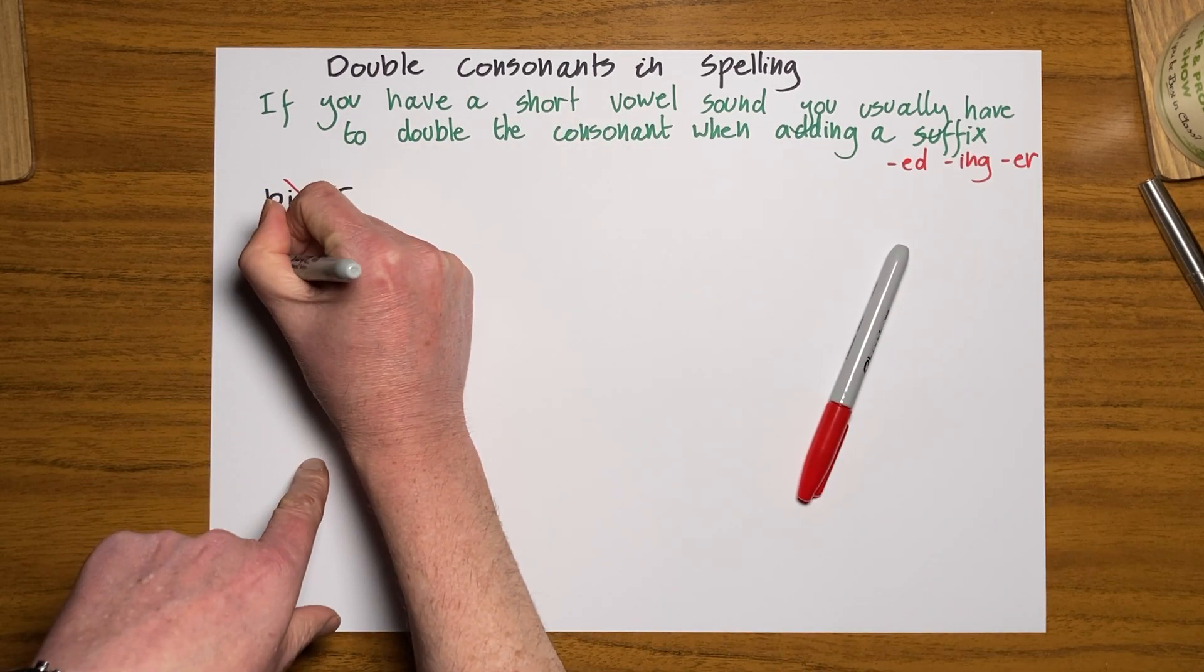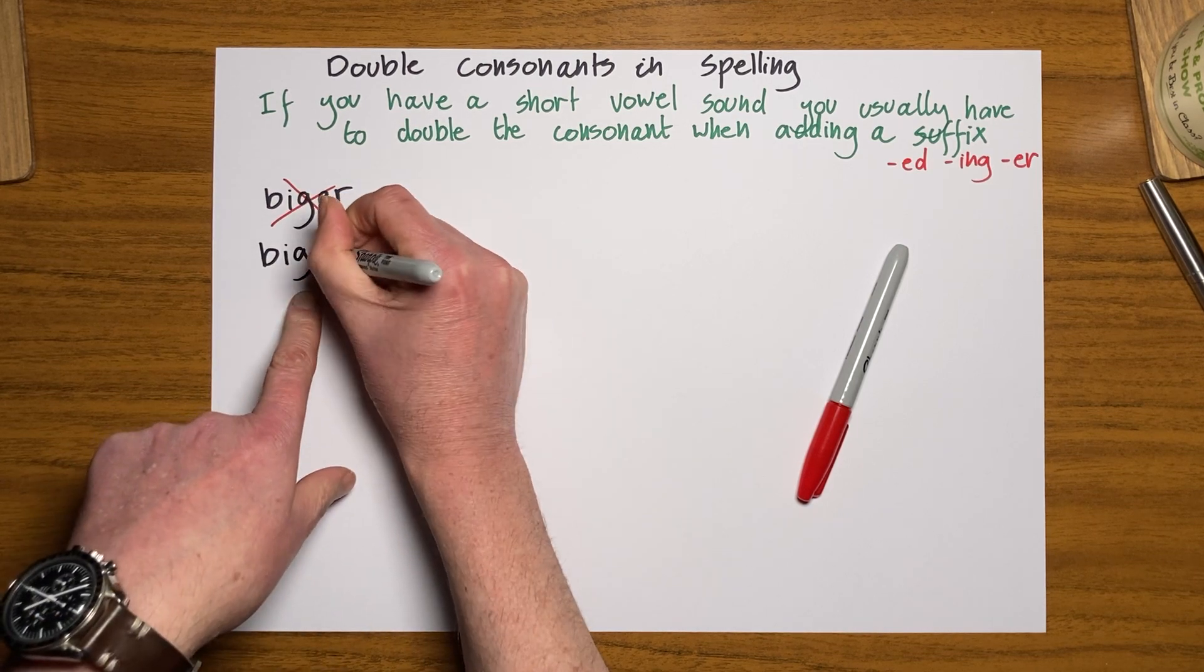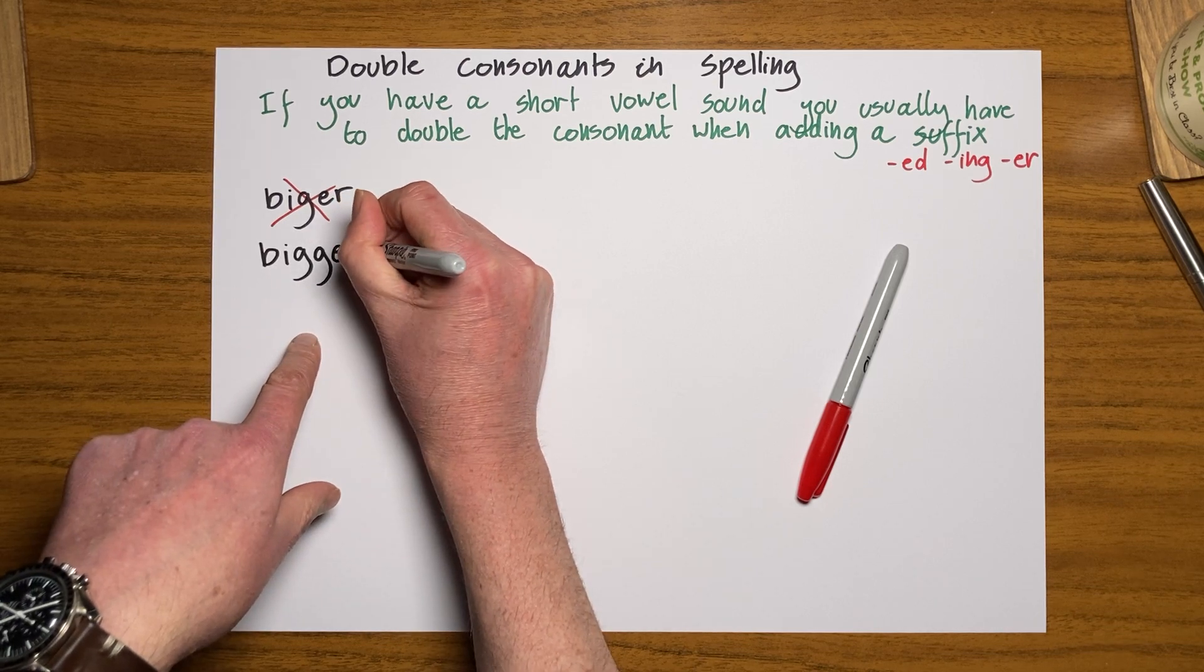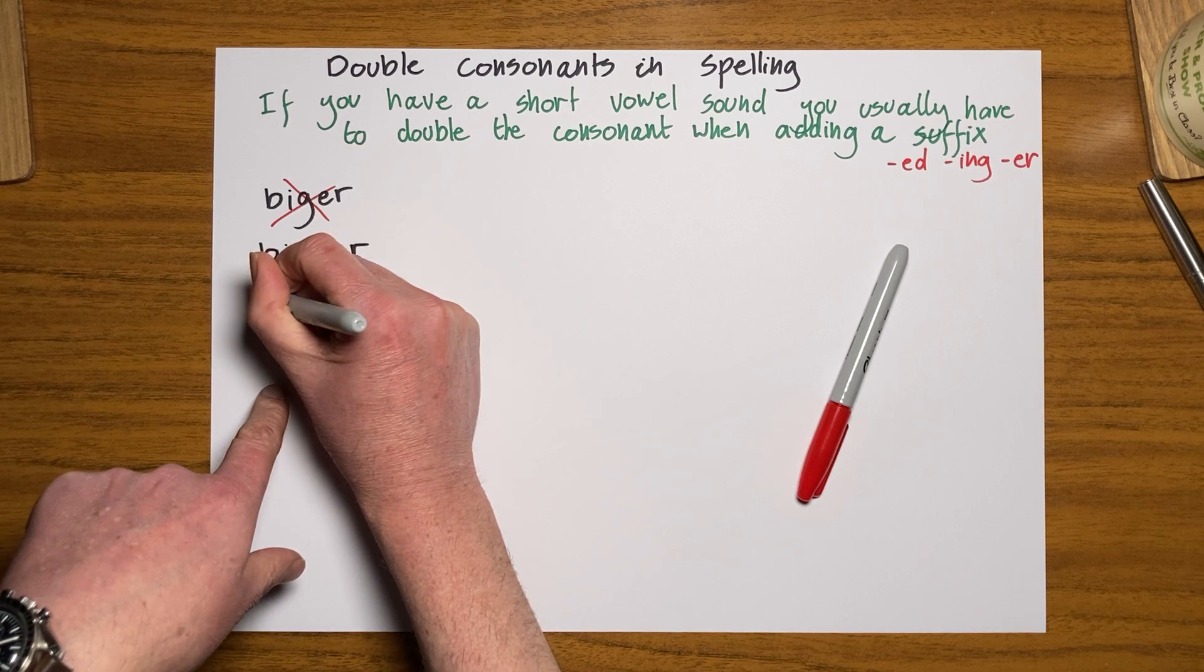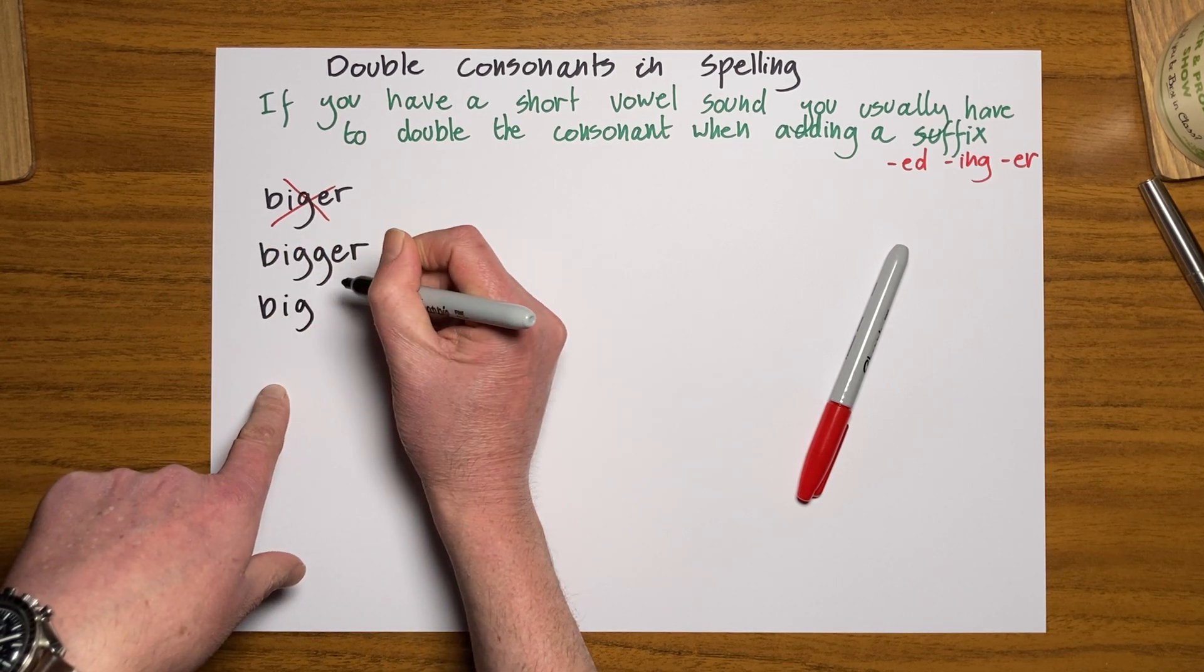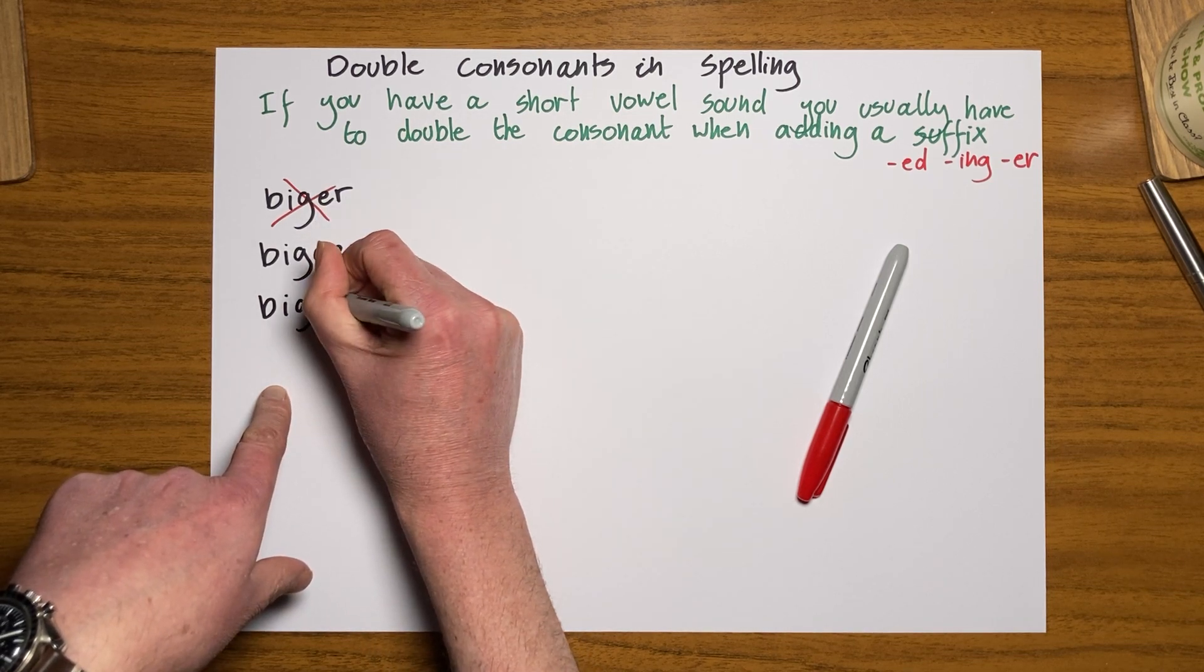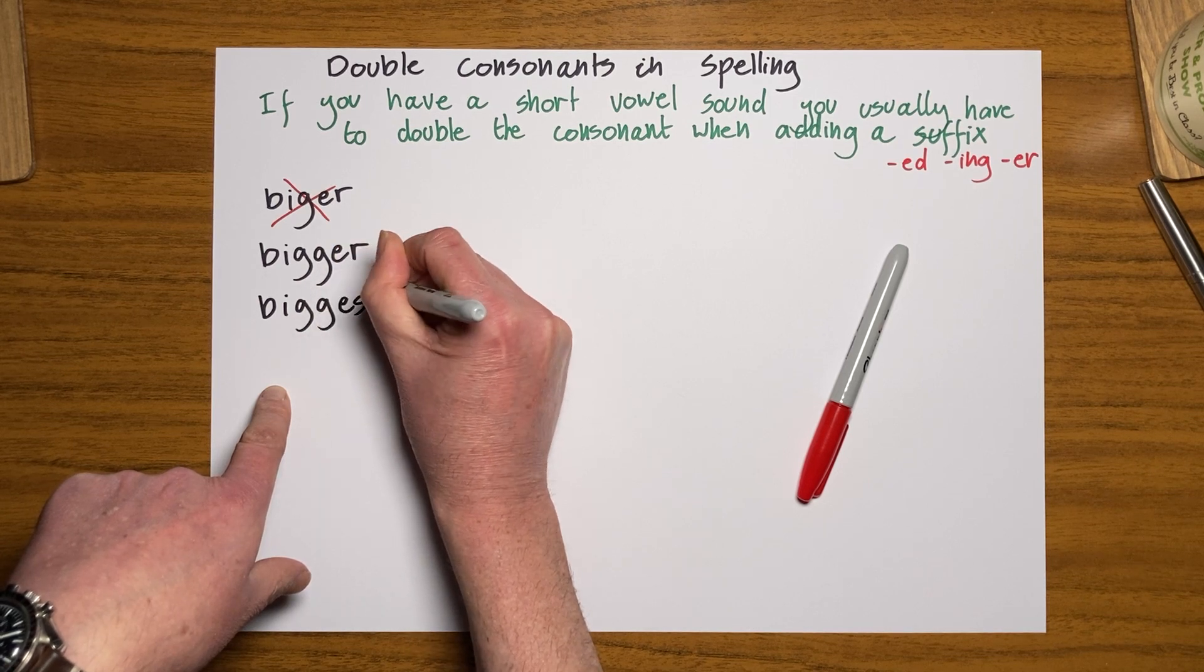So I've got a big house. To make it bigger, I need to double the consonant. I need to write that G again and write the suffix there - bigger. Maybe I've even got the biggest house. Well, I don't just add EST for the same reason. I need to double the consonant and write biggest.